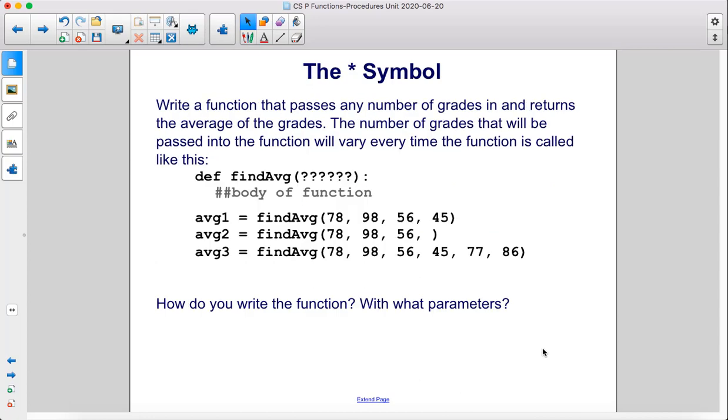Write a function that passes any number of grades in and returns the average of the grades. The number of grades that will be passed into the function will vary every time the function is called, like this. How do you write the function? With what parameters?